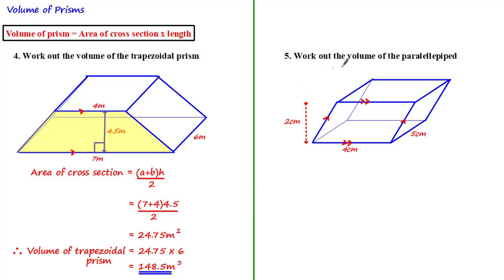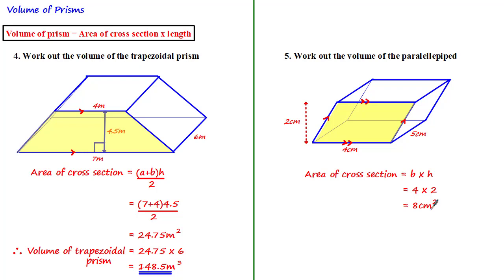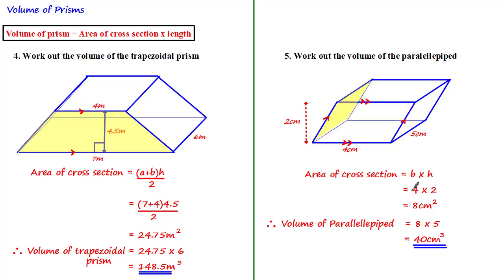Next, work out the volume of the parallelepiped. The cross-section face is a parallelogram, so we use the formula: base × perpendicular height h. That is 4 × 2 = 8 centimeters squared. The volume equals the area of cross-section times the length: 8 × 5 = 40 centimeters cubed. For these types of prisms, provided you know the perpendicular height and base length, any valid face chosen as the cross-section gives the same result.